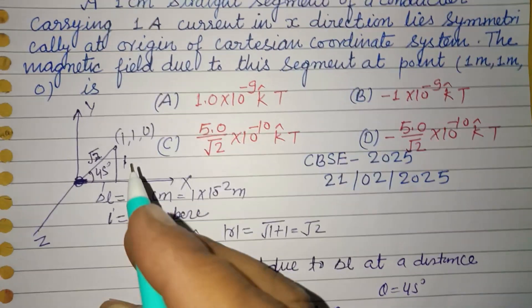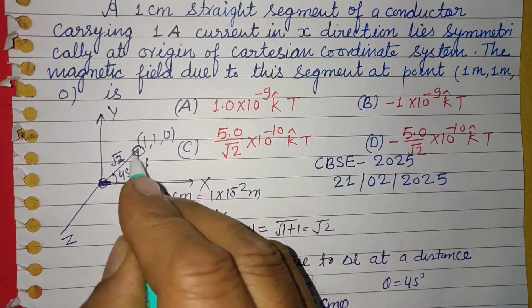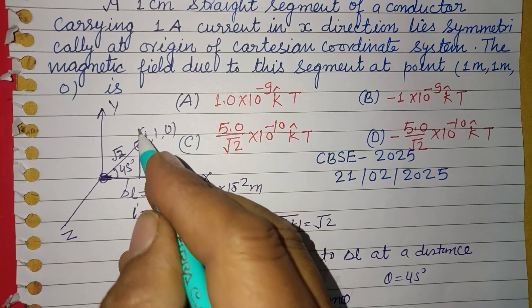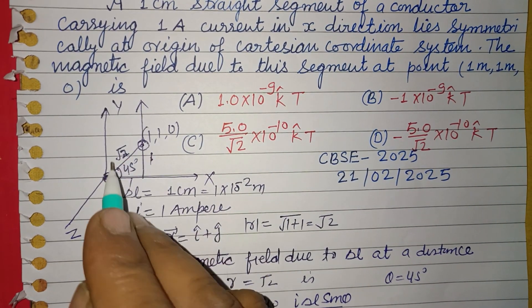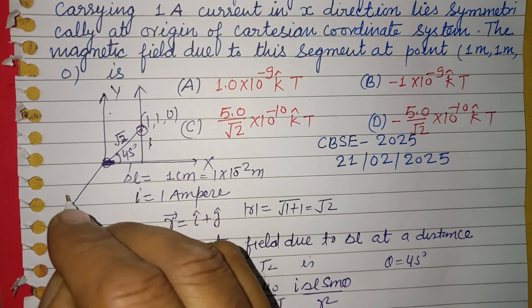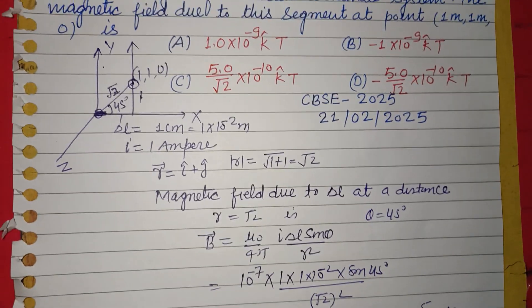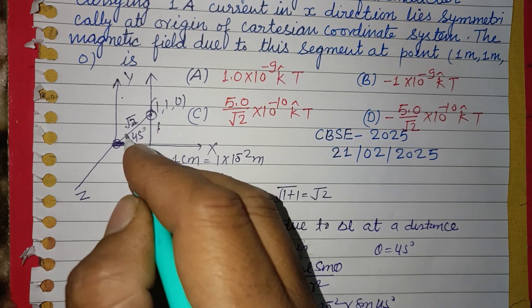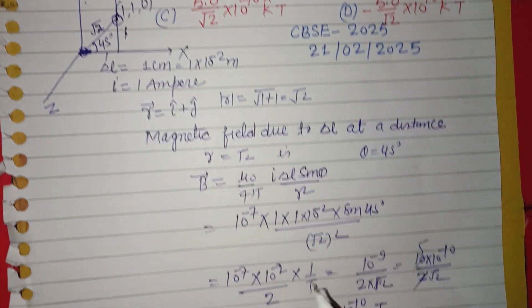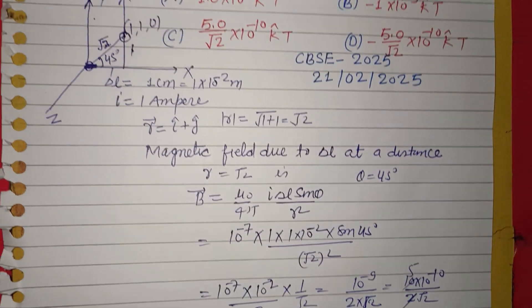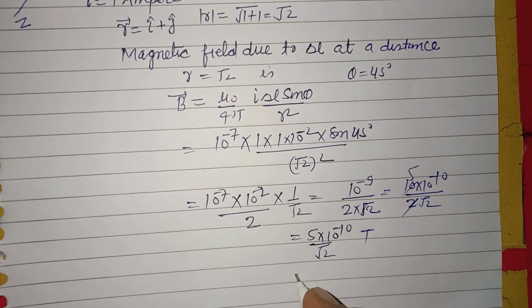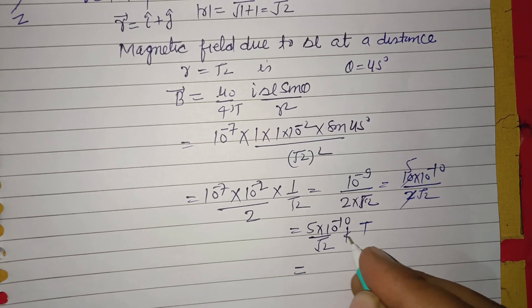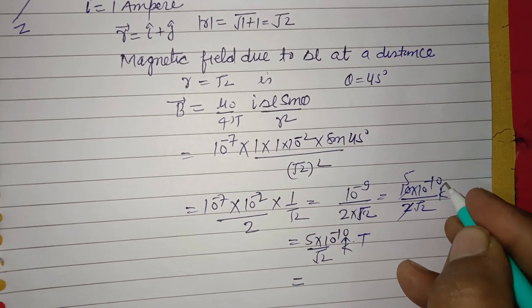Now its direction - the direction is outward, perpendicular to both x and y, which is z axis. In outward direction on z axis, we take k cap.